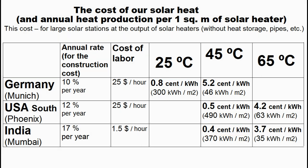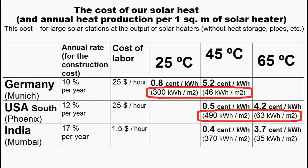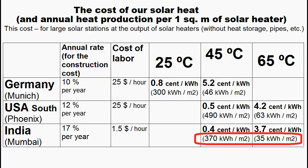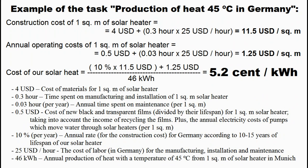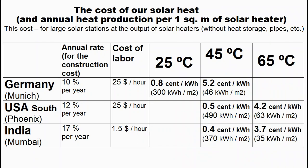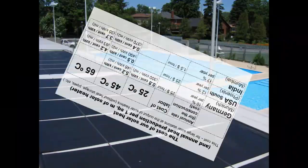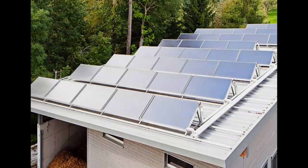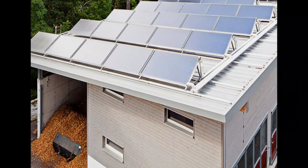We must understand that the main share of this heat is produced in summer, and some cases have no heat production in winter. However, the maximum production in India is in spring and autumn. Our solar heater can produce a lot of very cheap heat at a temperature of 30 or 40 degrees Celsius, and this heat may be interesting for heating pool water or for industrial processes in some types of plants and factories.